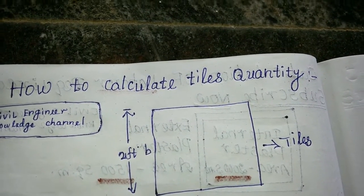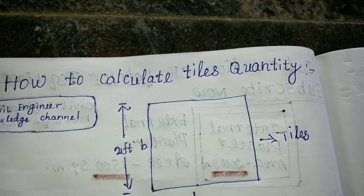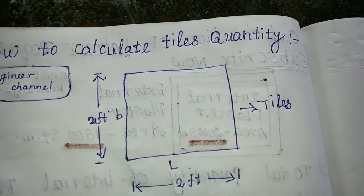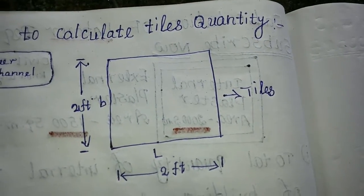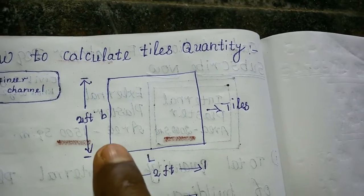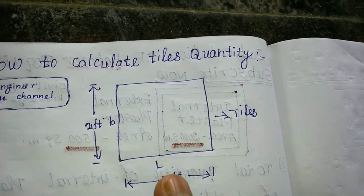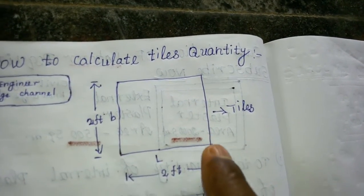Tiles Quantity. This is a Tiles area. This is a Tiles. This is a Length, Length 2ft, Birth 2ft.